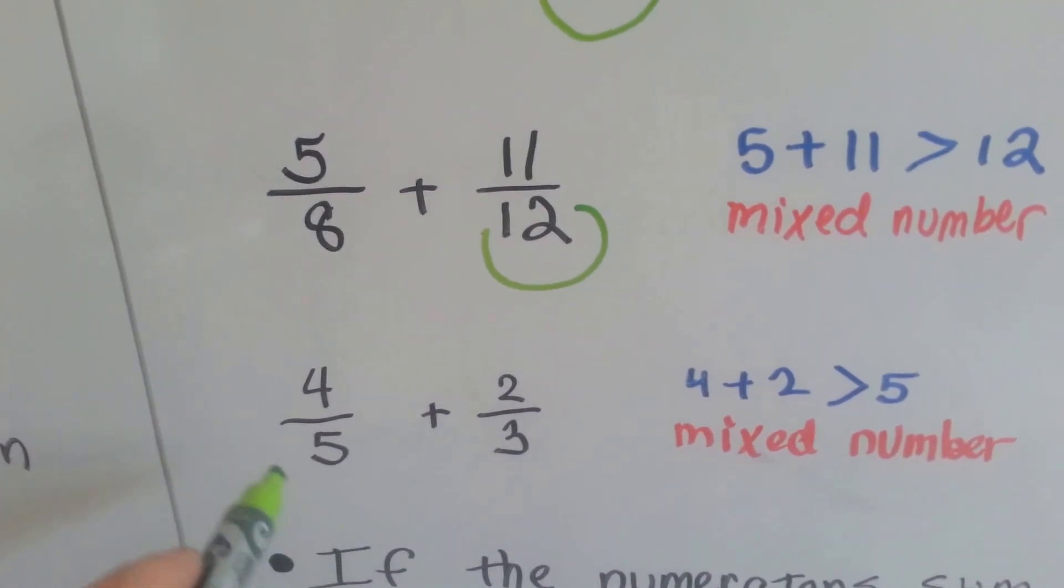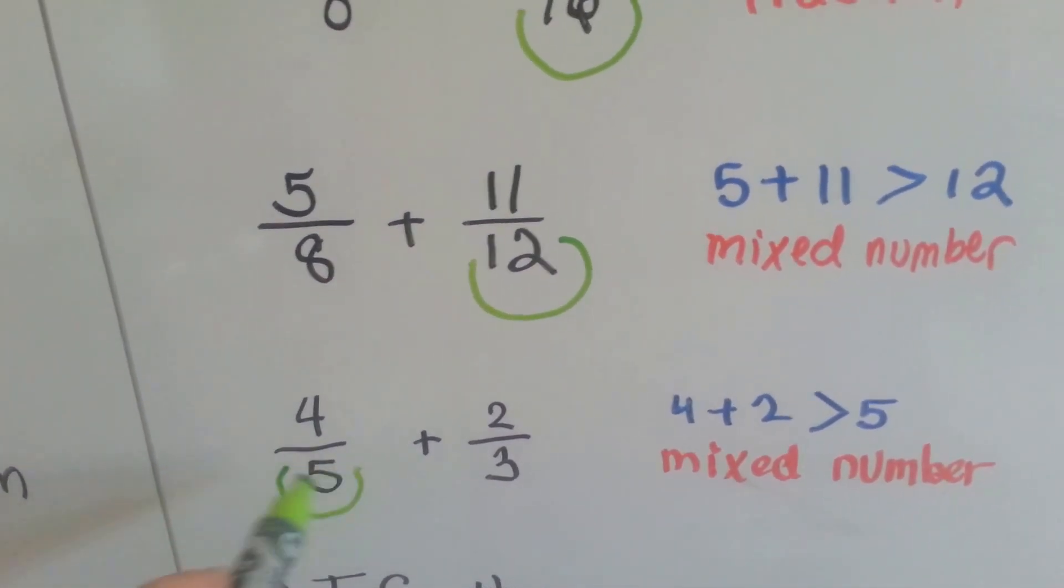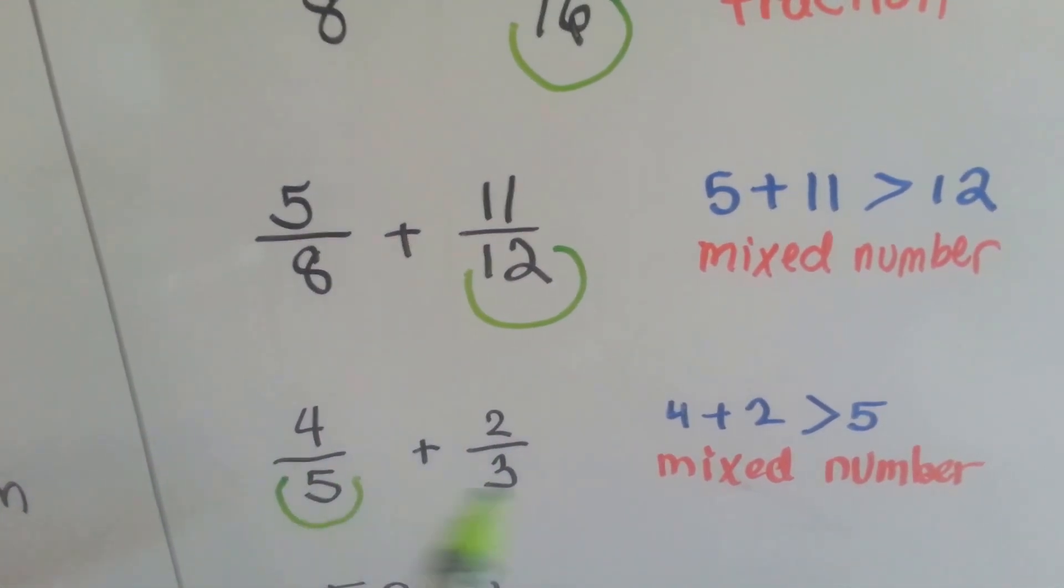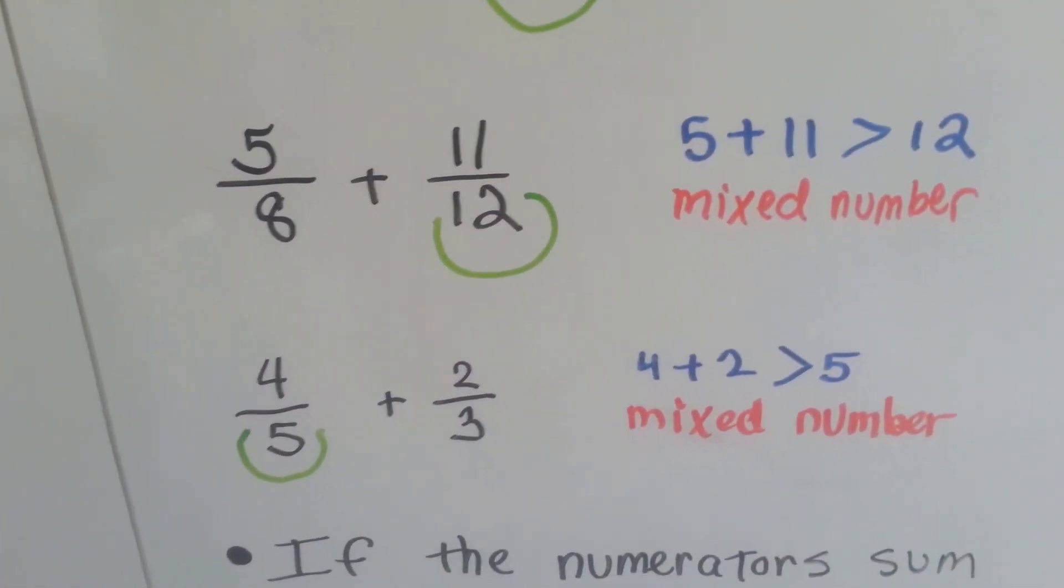Find the bigger denominator. It would be the 5. We add the numerators. 4 plus 2 is 6. 6 is bigger than 5, so we know the answer is going to be a mixed number.